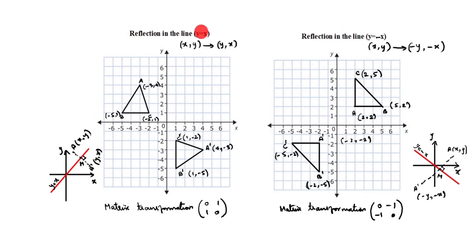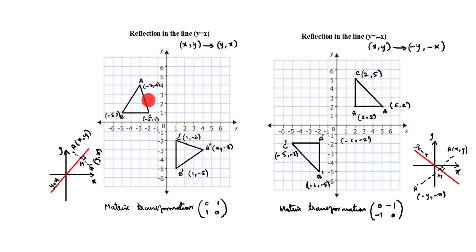Third type: reflection in the line y is equal to x. The given image is x comma y, and the reflected image is y comma x — the coordinates swap. So if a is minus 3 comma 5, then a dash is 5 comma minus 3. And c is minus 2 comma 1; reflected c dash is 1 comma minus 2.